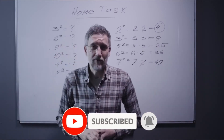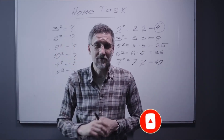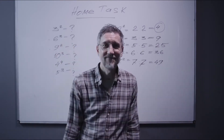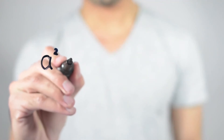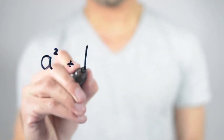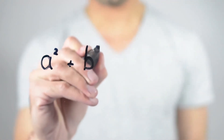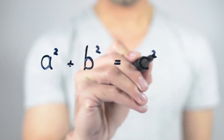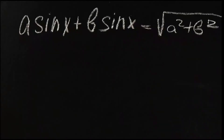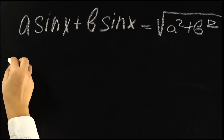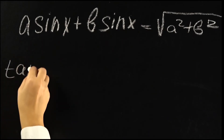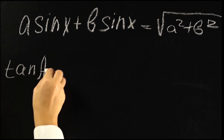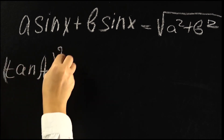We can derive the diameter formula from the circumference and the radius of the circle. Diameter of a circle using circumference: we can easily derive the diameter formula from the circumference. The formula for the circumference of a circle is C equals Pi times D, where C equals circumference, D equals diameter of a circle, and Pi equals the constant 3.141. Therefore, the diameter formula using circumference is: Diameter equals Circumference divided by Pi.